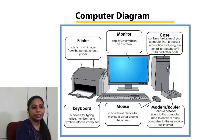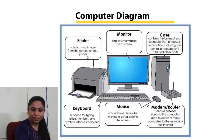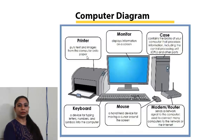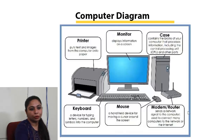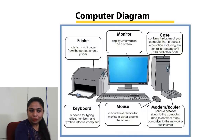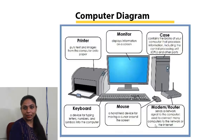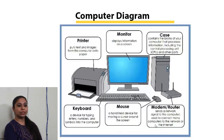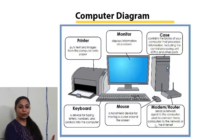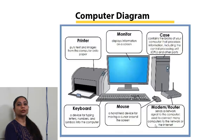The printer puts text and images from the computer onto paper — you give the computer a print command and get the printout. The modem or router is used to send a network signal to the computer and to connect many computers to a network or the internet.